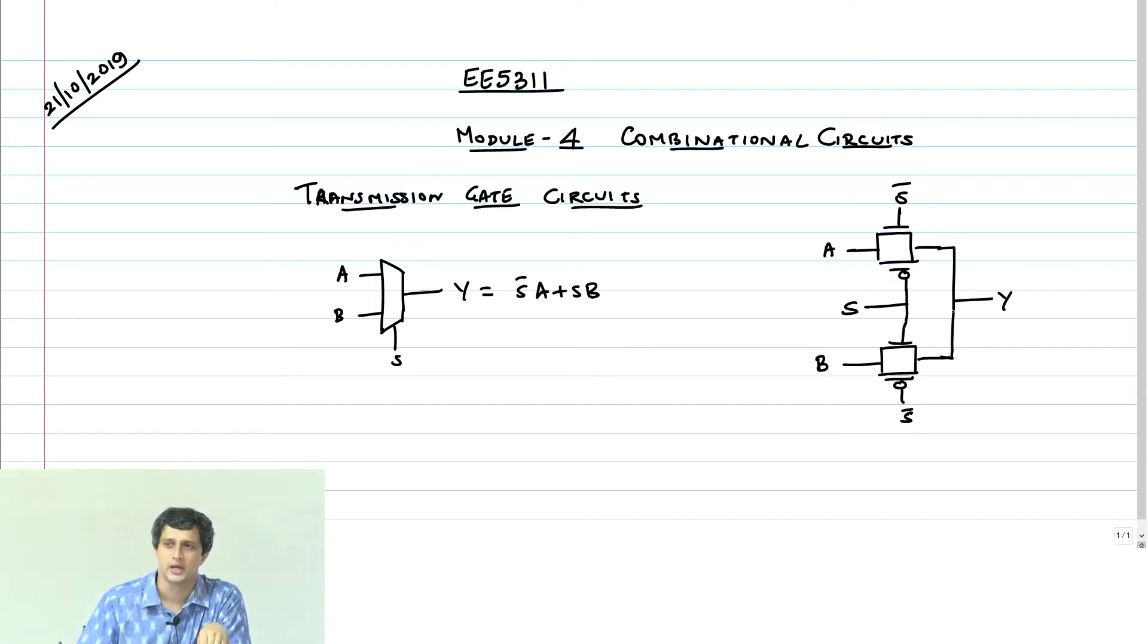The main thing that we are exploiting here is, if a transmission gate is off, then the output goes to a high impedance state. I am driving one end with an input A or B. But if that path is off, that means both the NMOS and PMOS are off, then the output, let me say Y1 and Y2, will go into high impedance state in a mutually exclusive manner.